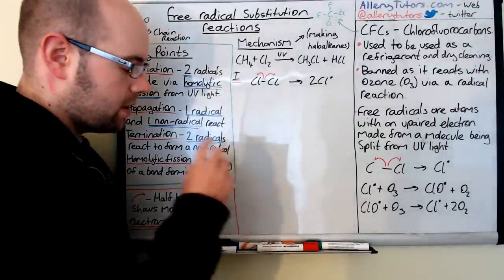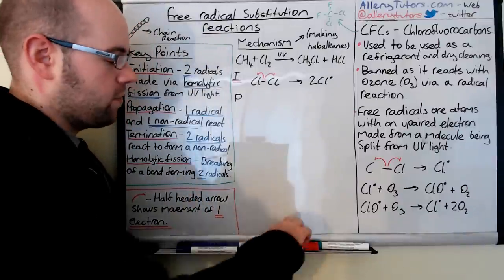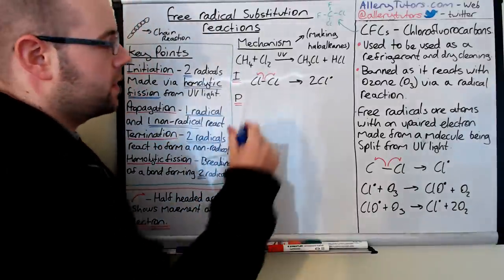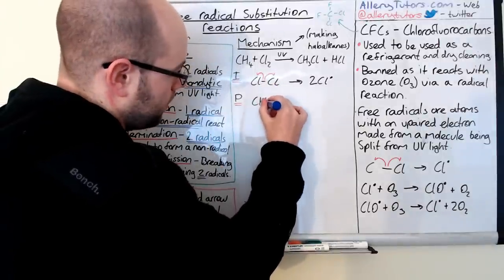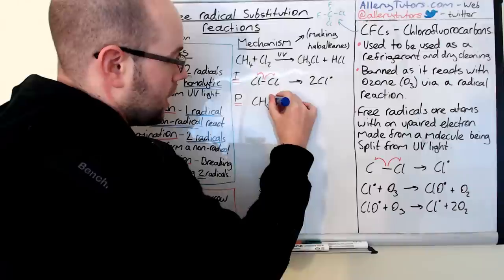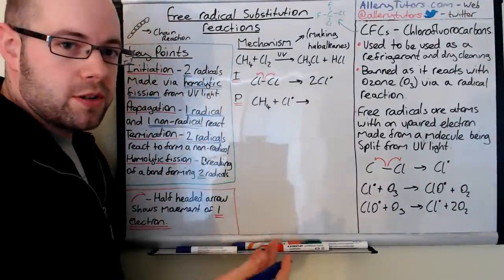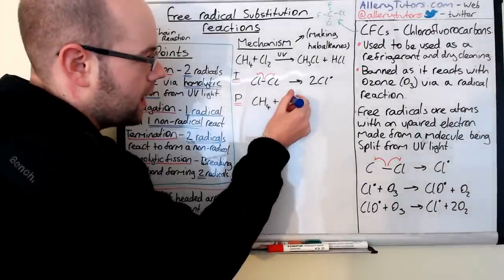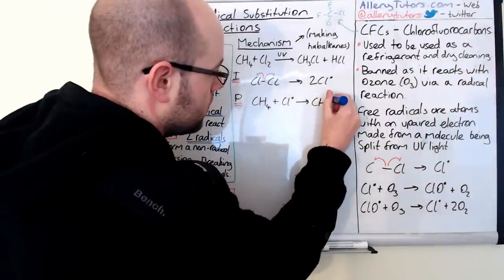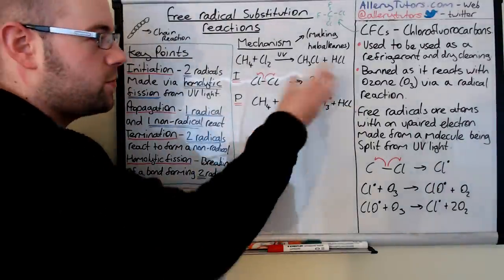Then we need to do the propagation step. For propagation, we now need to bring in our methyl molecule, so we're going to bring in CH4, and we're going to react this with the chlorine radical Cl dot that we formed. Now these two react, and the radical is effectively being passed from one molecule to another. Hydrogen comes off the CH4, and the dot transfers over onto the methyl group. So what we make is CH3 dot plus HCl — the radical has been moved across, like pass the parcel.